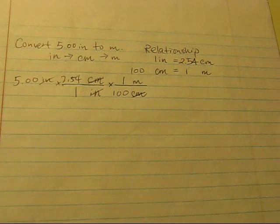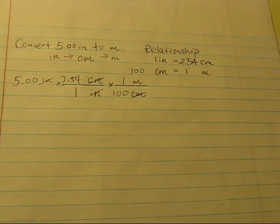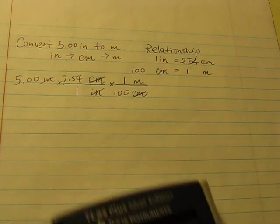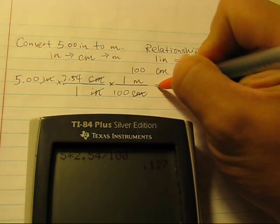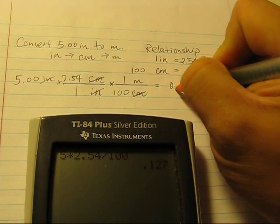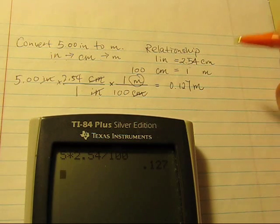After we cancel the unit, we can go ahead and do our calculation. This is multiplication, and it doesn't really matter which one you do first. You just have to do it carefully. What we're going to do is 5 times 2.54, and then divide by 100, which is 0.127. And the remaining unit is meter.